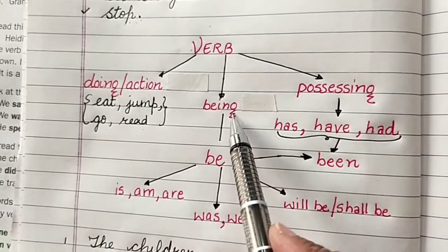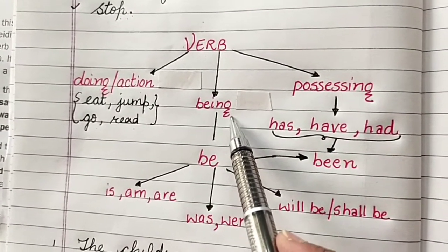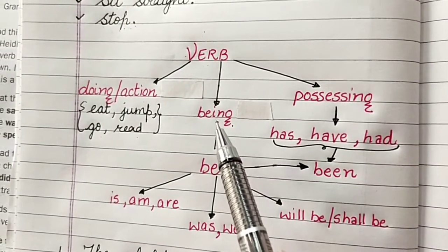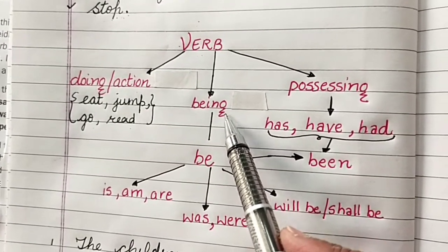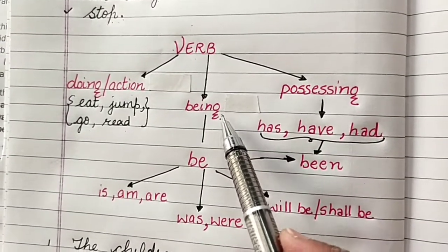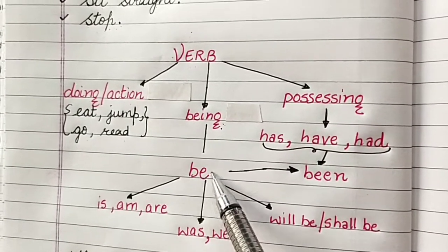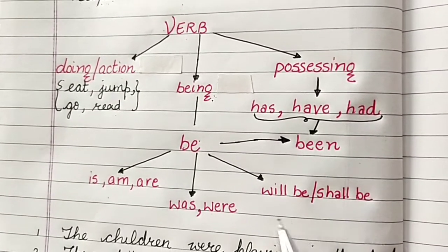It could also denote my being. If I say I am a teacher. So am is denoting my being. That I am a teacher. So being is denoted by the word be. Be has different forms.